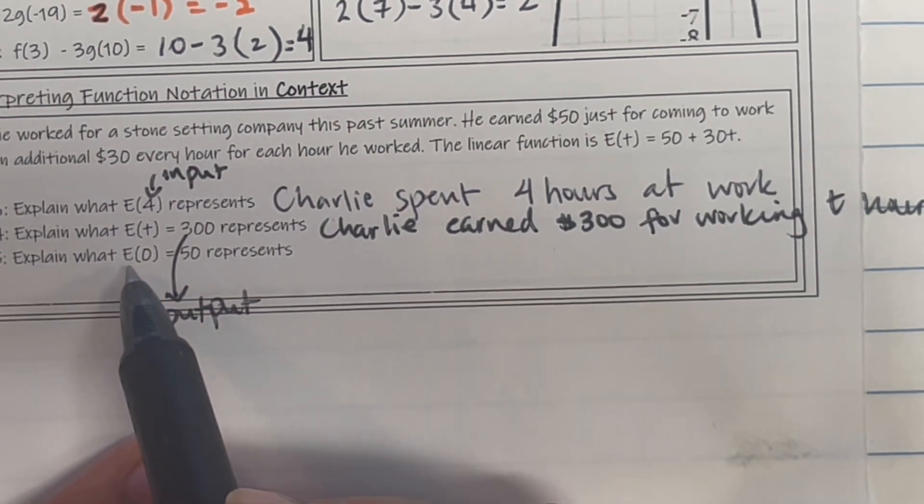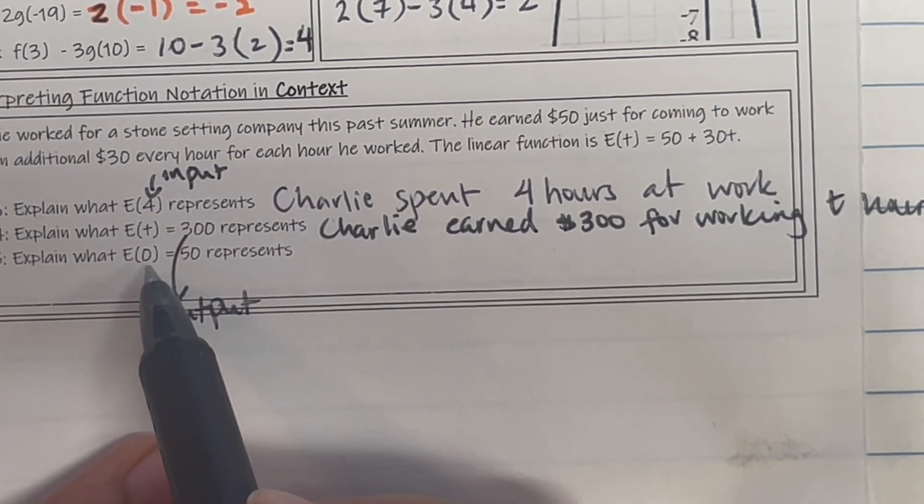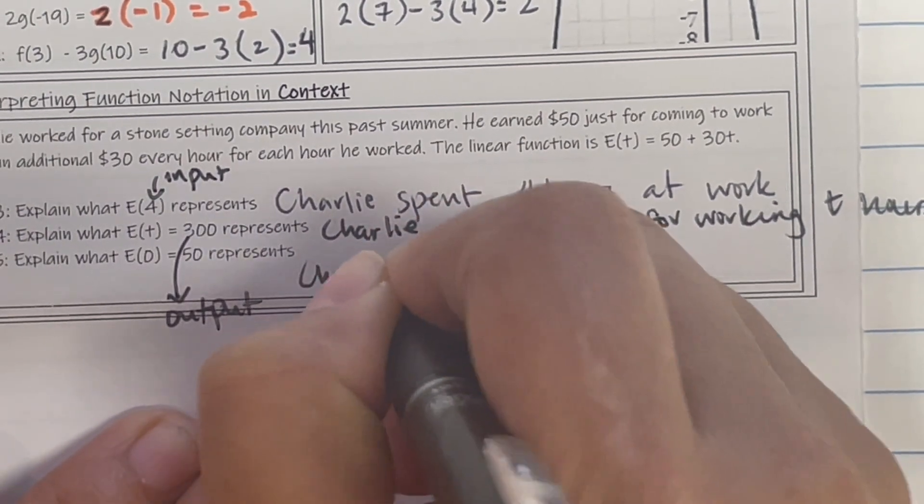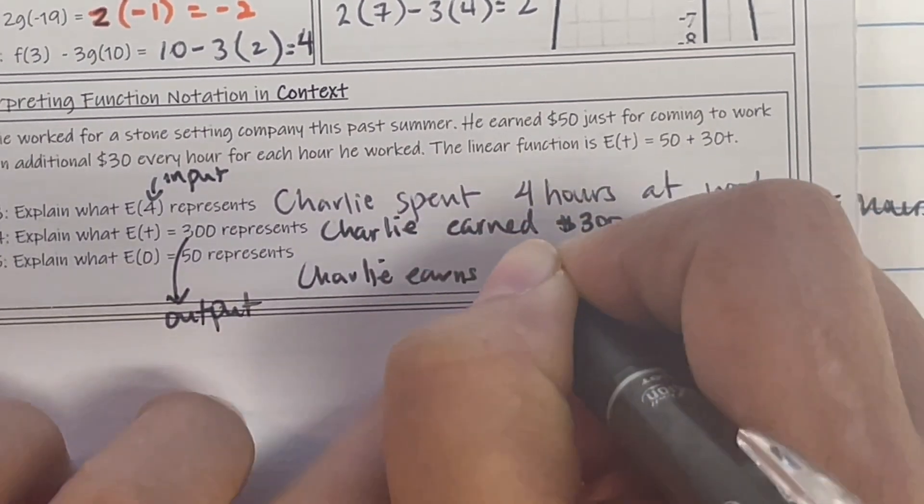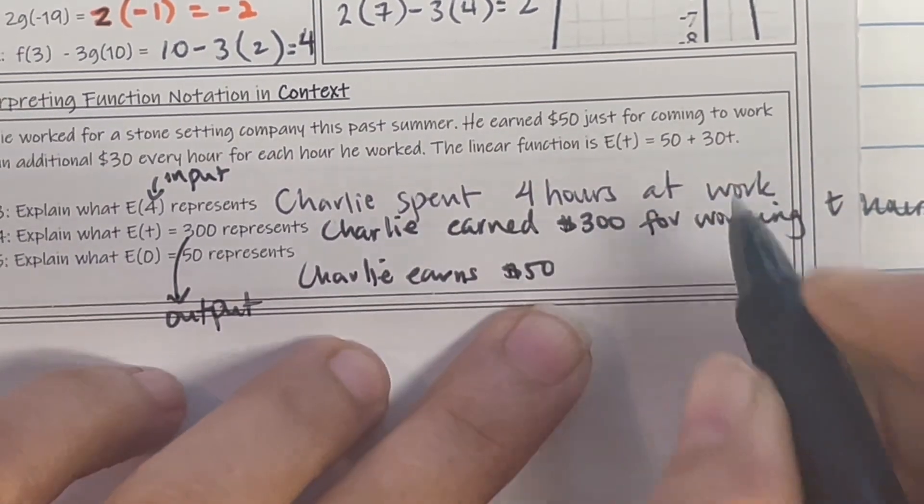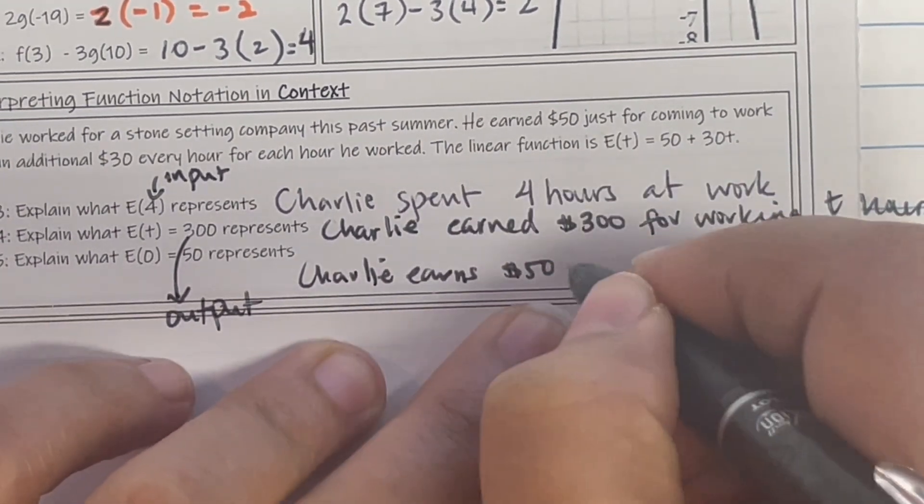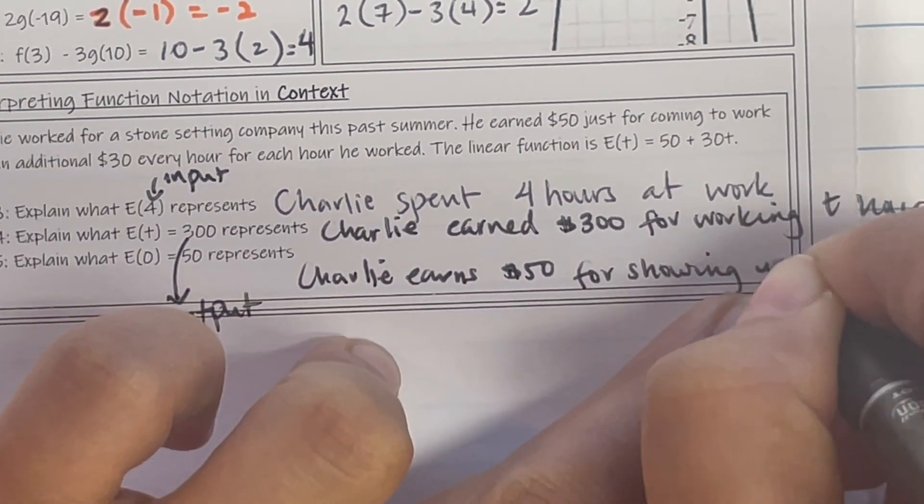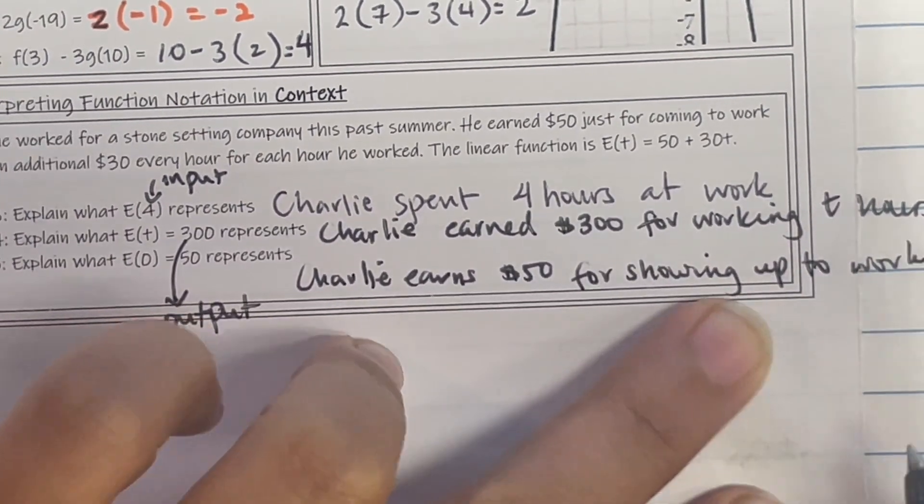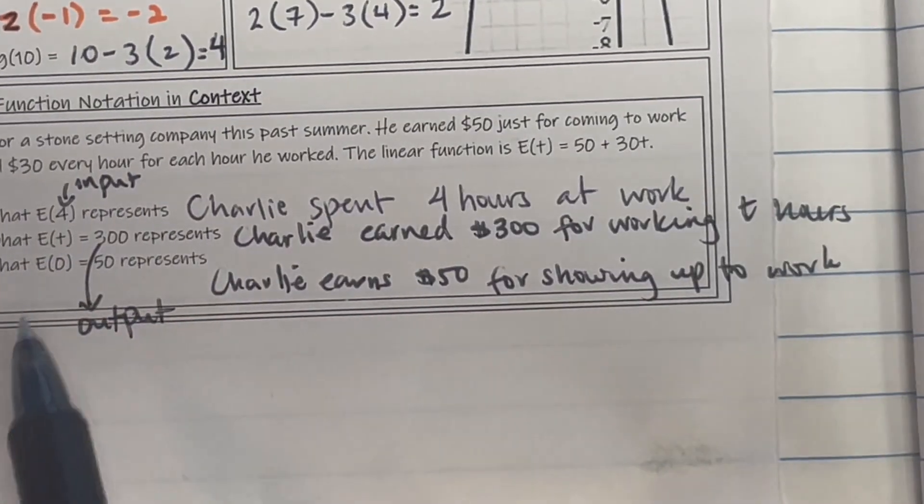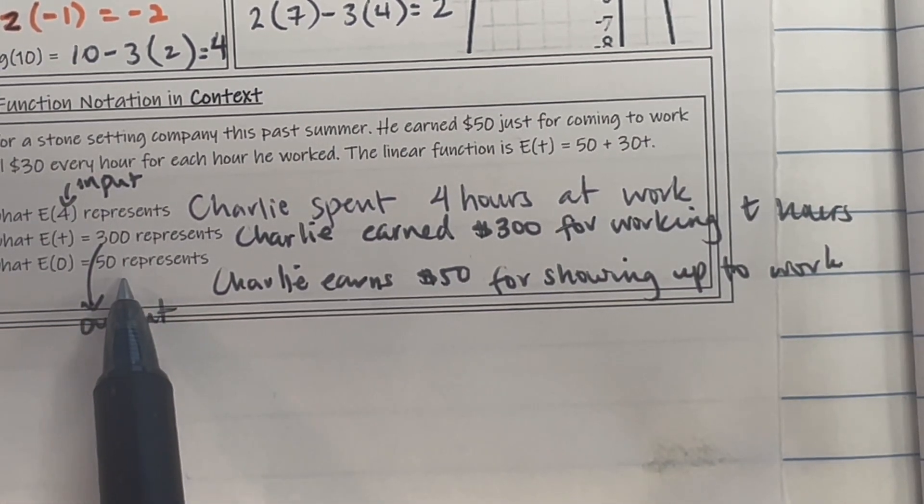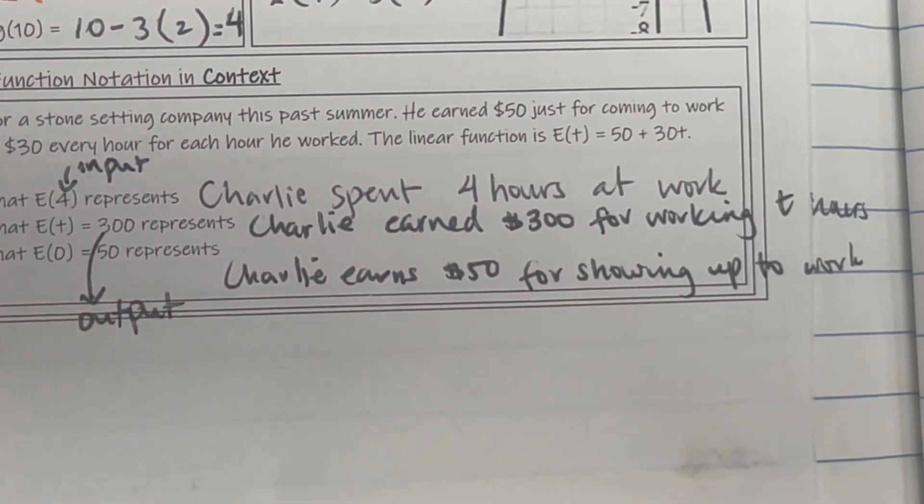So example 15, explain what E(0) means. So 0 stands for my input. I put in nothing, right? So for zero hours, I get $50. What does that mean? Charlie earns $50 for zero hours. So Charlie earns $50 for showing up to work. Once again, the way you read that one is I worked for zero hours and got $50. So without working, I'm getting $50. Let's take a look at another example.